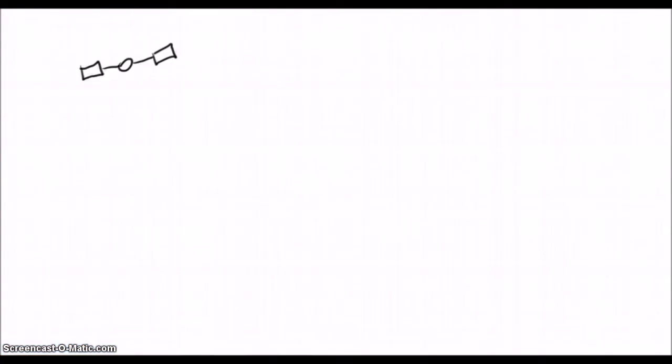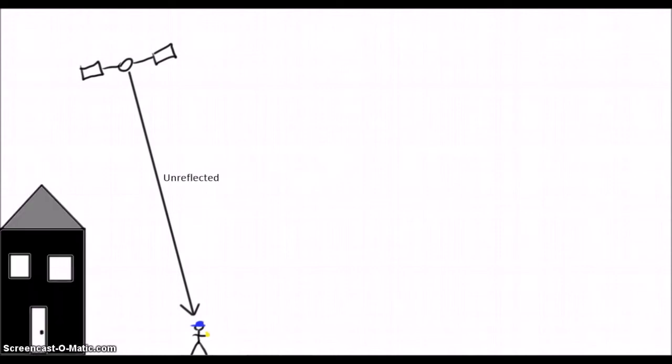Multipath error is a bit easier to understand and explain. The whole idea of GPS is that a signal goes straight from the satellite to the receiver. But what if it gets there by bouncing off a building first? This happens all the time, where a signal from one satellite arrives at a receiver a bunch of different times. One of those signals was a straight line, but many were reflections.